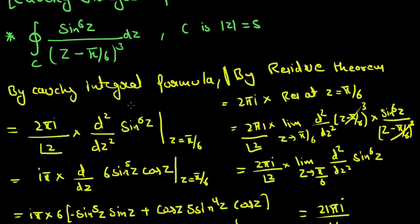This is our function here and it has a pole of order 3 at z equal to pi by 6. For residue theorem, by Cauchy integral formula, this will be equal to 2 pi i by 2 factorial, because the degree is 3. So here it will be 2 times the second order derivative with respect to z.